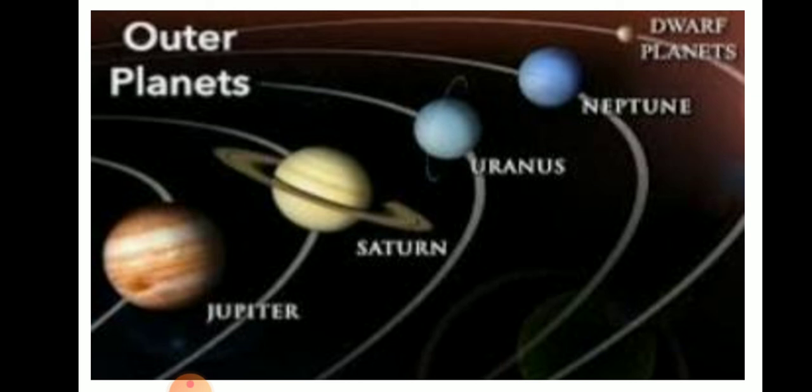Let us now discuss about Uranus. It is the third largest planet and the first planet that was discovered by telescope. Uranus has 27 moons and a period of revolution of about 84 years. Neptune has 14 moons and the period of revolution is 165 years, and strong blowing storms are a feature of this planet.